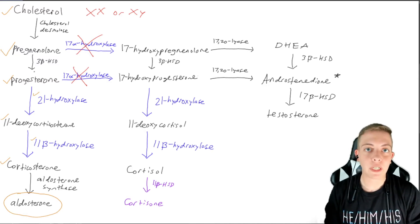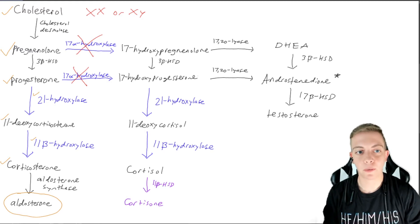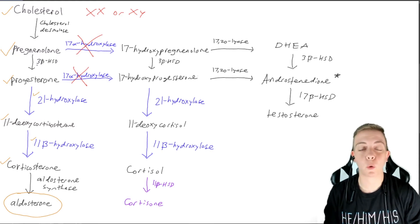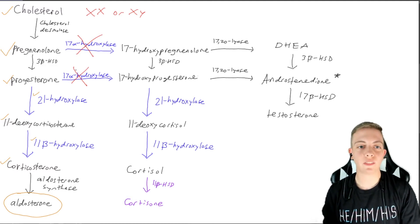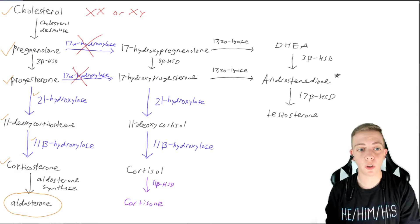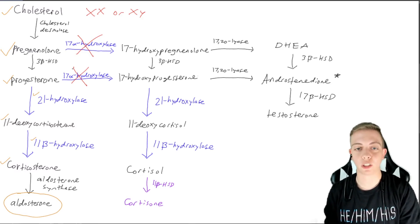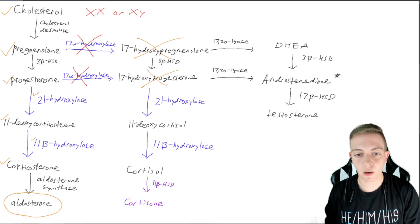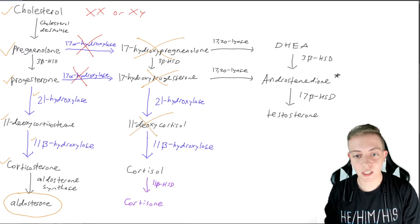But let's say we needed to make some cortisol. So let's say we have some inflammation that we want to get rid of, or we're in a time of stress and we need some cortisol. We can't go this way because we don't have 17-alpha-hydroxylase, which is our common enzyme to go from pregnenolone to 17-hydroxypregnenolone, and also from progesterone to 17-hydroxyprogesterone. So we can't at all go to this cortisol pathway. We can't make 11-deoxycortisol, we can't make cortisol, and we can't make cortisone.